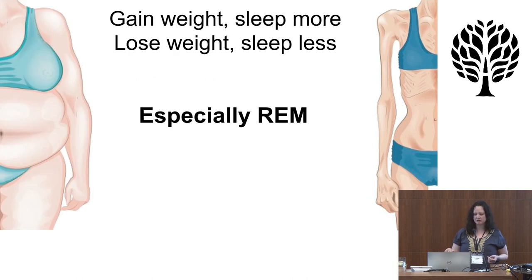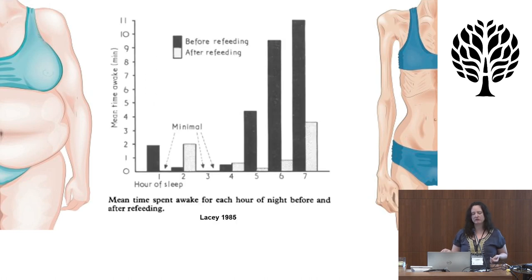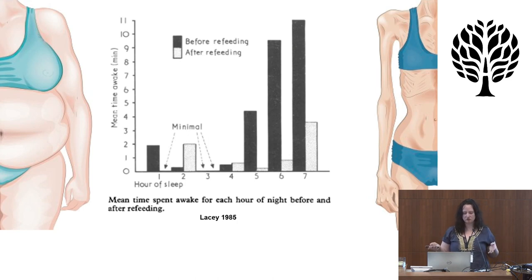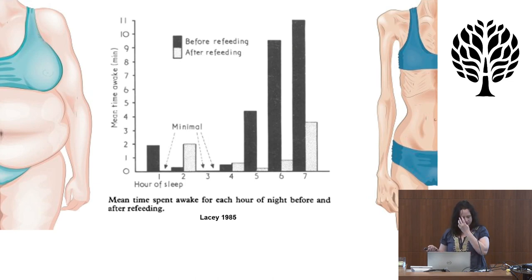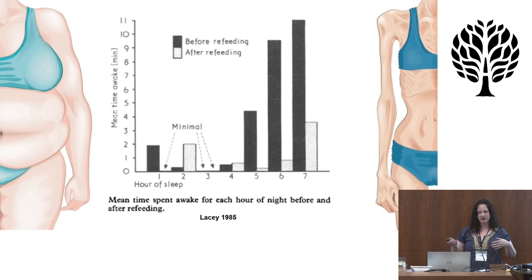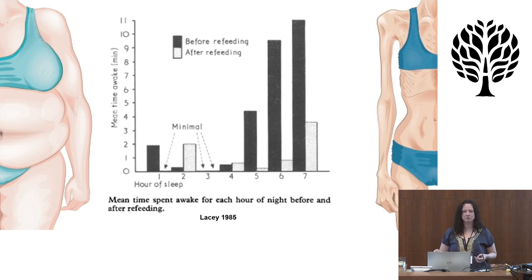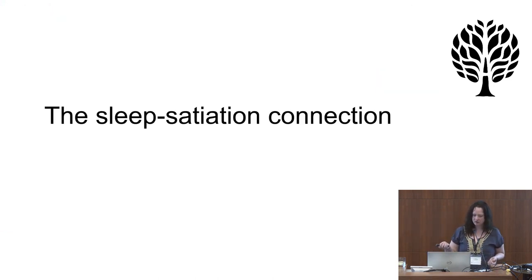This is particularly relevant for REM sleep. If you look at the anorexia study, people with anorexia tend to wake up a lot in the latter half of the night — which is where REM sleep is happening. More generally, whenever you curtail sleep, since slow-wave sleep is associated with that need for sleep, it usually takes priority. Sleep curtailment almost always disproportionately affects REM.